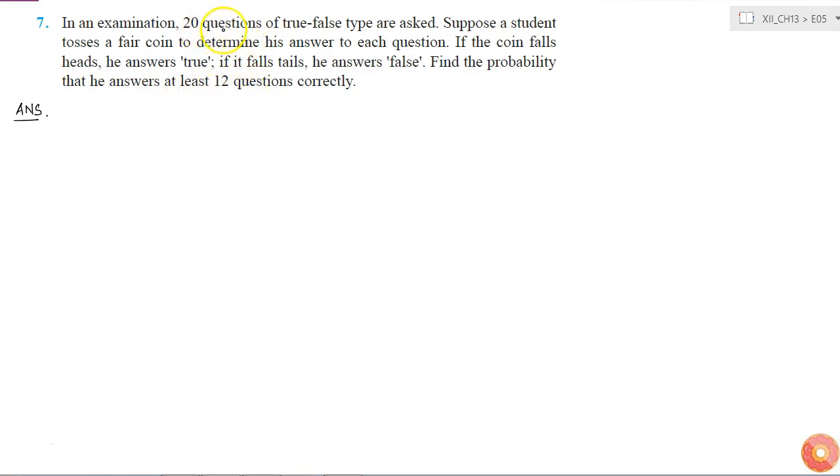So you have 20 questions and there are only two possible outcomes, which is getting a correct answer or wrong answer, and all the questions are independent of each other. So this is an example of Bernoulli trials with n equal to 20.